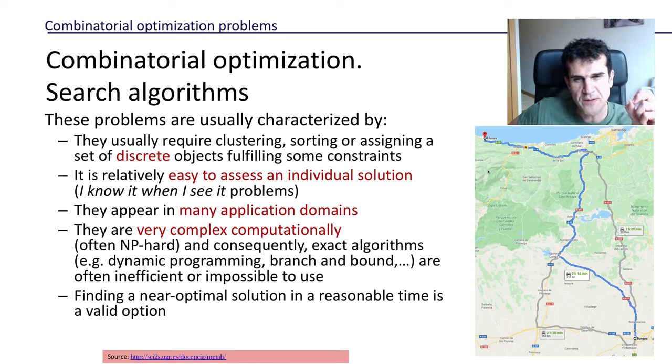But often it is not that difficult to check whether one solution is good or not. This feature is sometimes called an 'I know it when I see it' problem—it's reasonably easy if you give me a solution to check whether that's good or not.